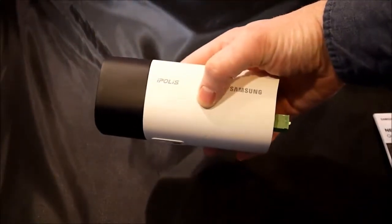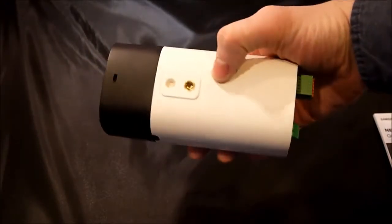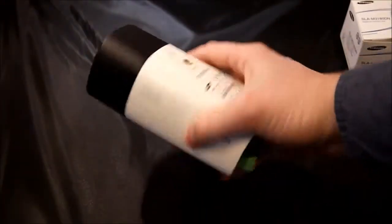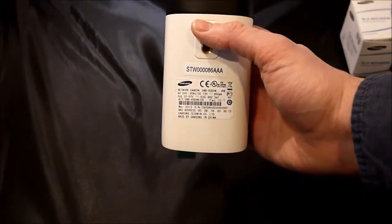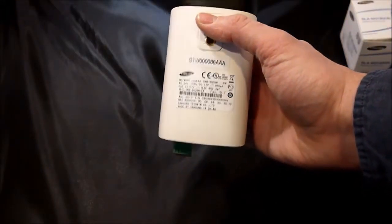On the camera itself, you'll see we have the tripod mounting hole on the bottom and on the top. We've got your serial number and MAC address on the top of the camera.